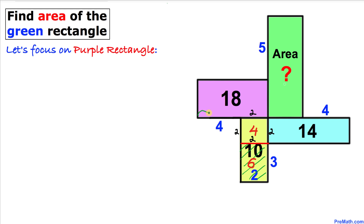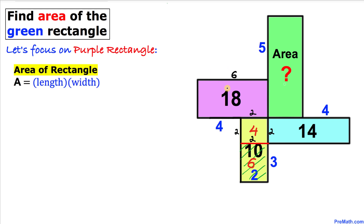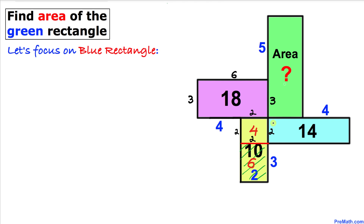Now let's focus on the purple rectangle. The whole side length is four plus two, which is six. Since the area of the purple rectangle is 18, and area equals length times width, if one side is six then the other side must be three, because three times six equals 18. So this side length is three and this side length is three as well.